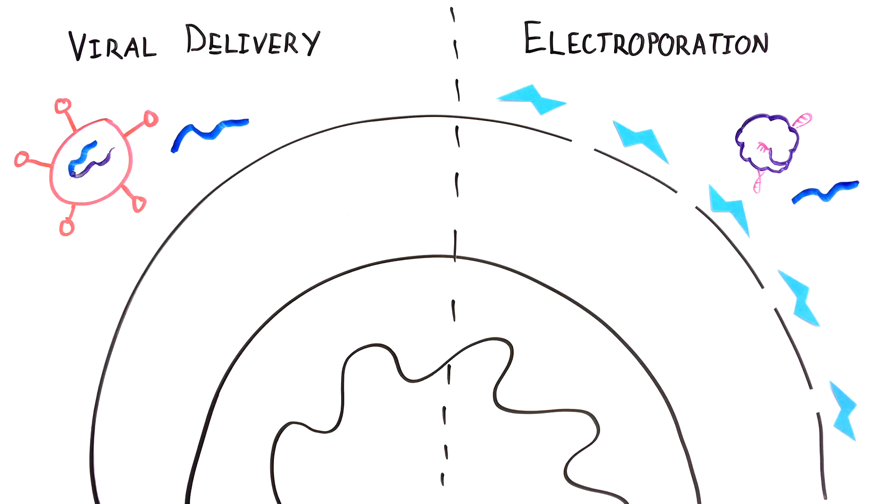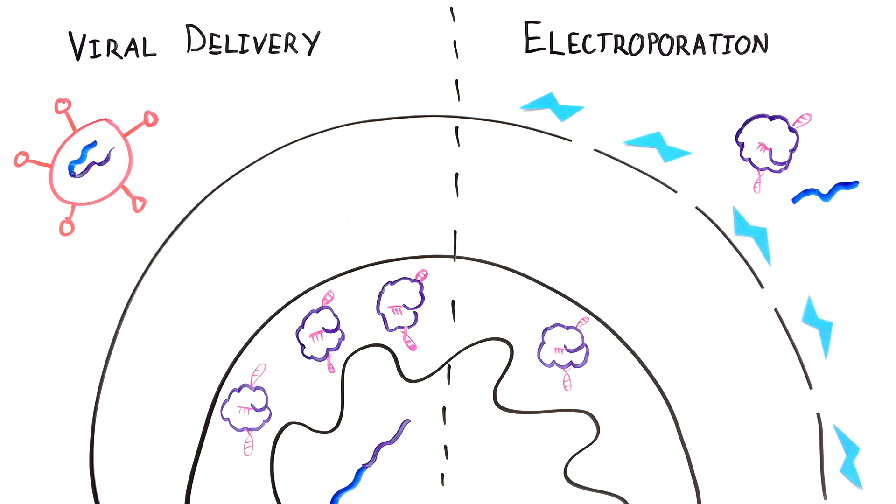Furthermore, by introducing Cas9 directly into the cell rather than delivering the DNA that encodes the genetic instructions for Cas9, the team avoided inaccurate cutting.